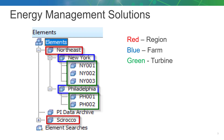Within AF, the customer has configured event frames to monitor turbine downtime events. These event frames are set to trigger whenever the turbine is in a status other than run.